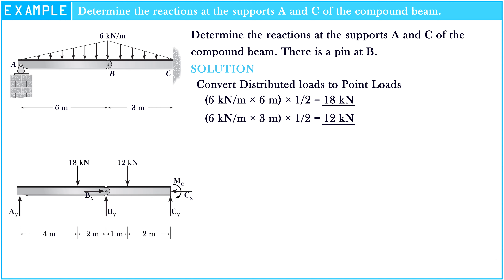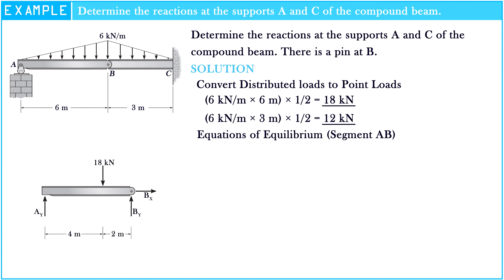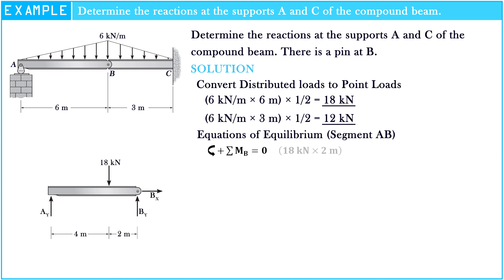After that, let's apply the moment equation of equilibrium about A and B respectively. The sum of moments at point B is equal to zero. So: 18 kN multiplied by 2 meters minus Ay multiplied by 6 meters is equal to zero. Hence, Ay is equal to 6 kN.